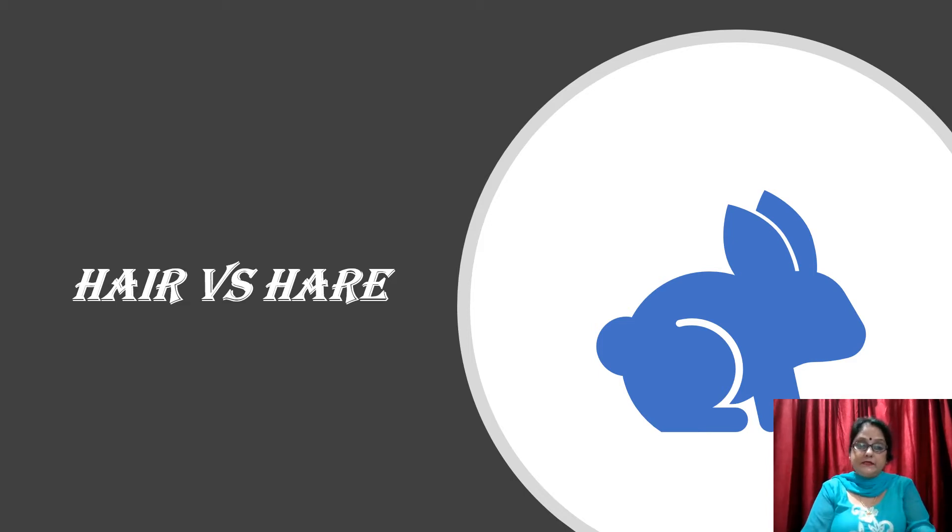So, ye do words, iska difference bhi samjhehengi. Spellings me thoda sa difference hai aur meaning me bohat bada. So sab se pahle video start karne se pahle aap ye bataiye, ye jo picture hai, ismae koon sa hair lagega? Ye wala ya ye wala? Yes, this one. Okay, ye khargoosh hai, ha na? Bada wala khargoosh hai ye. Rabbit. So, let's get started.